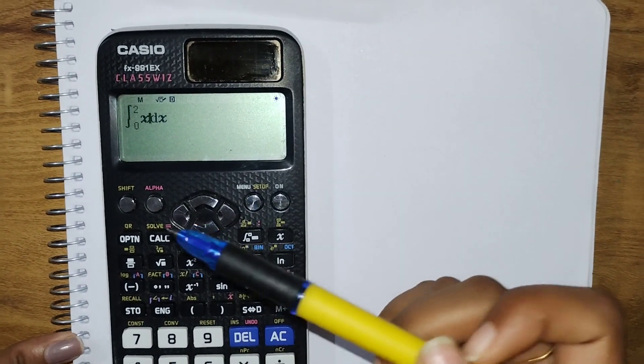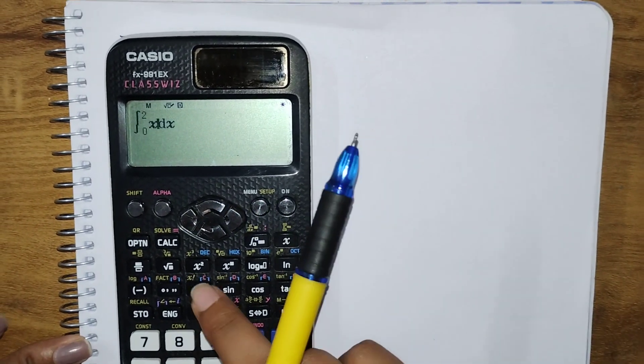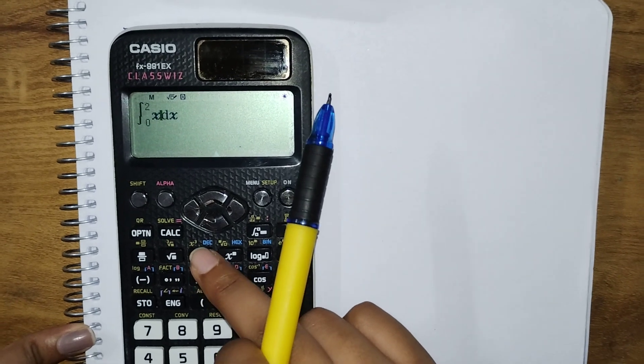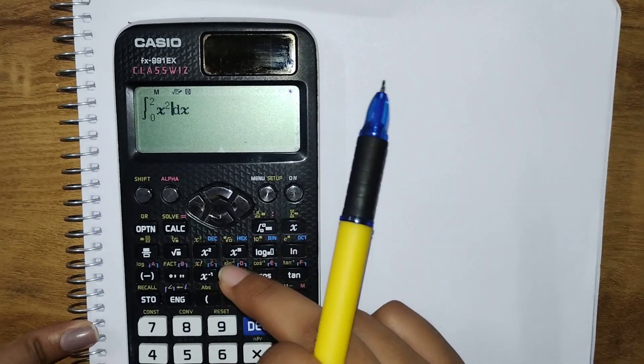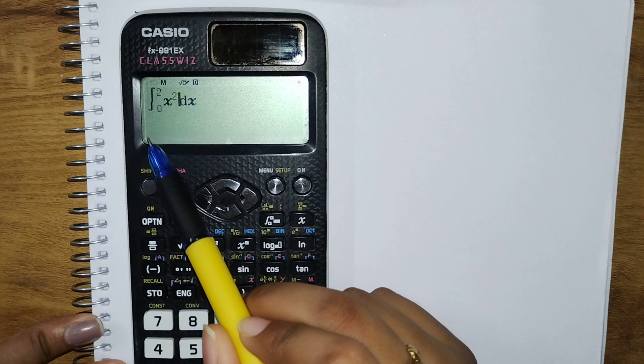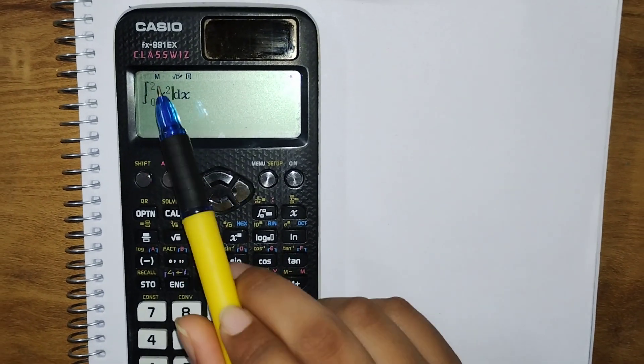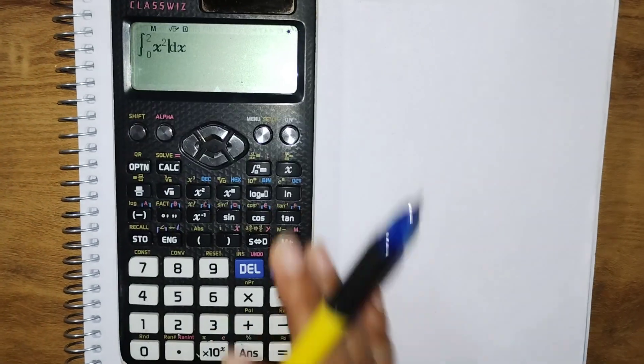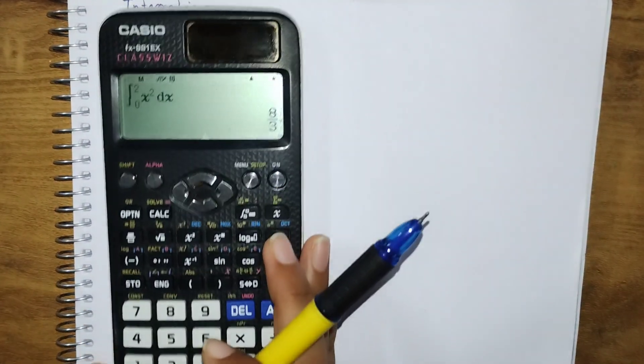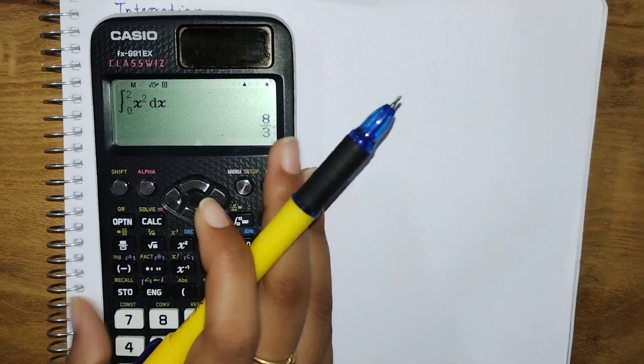Here we need the power x². You can see here this power, that's the square thing. Click on this. We got x² with limit 0 to 2. Integration of x² with range 0 to 2. Click on equals. We have got our answer: 8/3. That was easy.